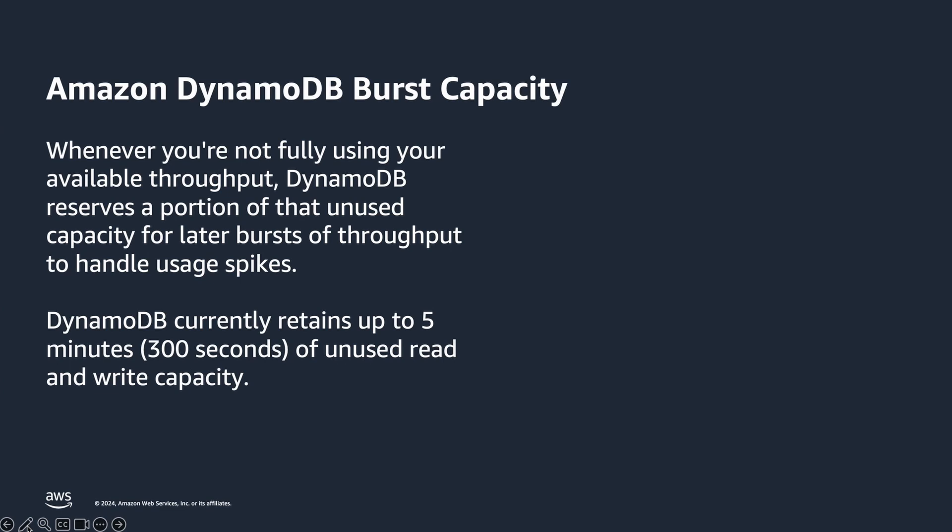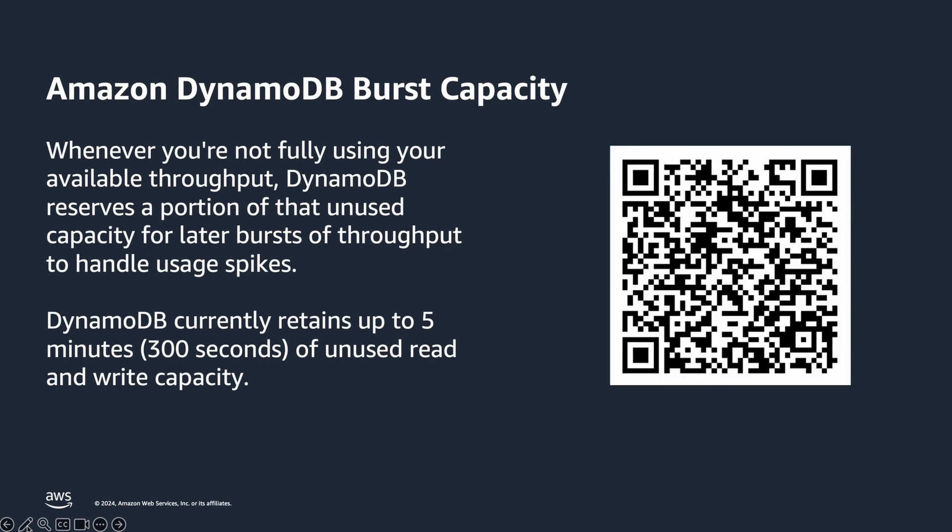Let's discuss burst capacity. Whenever you are not fully using your available throughput, DynamoDB reserves a portion of that unused capacity for later bursts of throughput to handle usage spikes. DynamoDB currently retains up to 5 minutes, that is 300 seconds, of unused read and write capacity. During occasional bursts of read or write activity, these extra capacity units can be consumed. There is no way to monitor this capacity, and DynamoDB can also consume burst capacity for background maintenance and other tasks without prior notice.